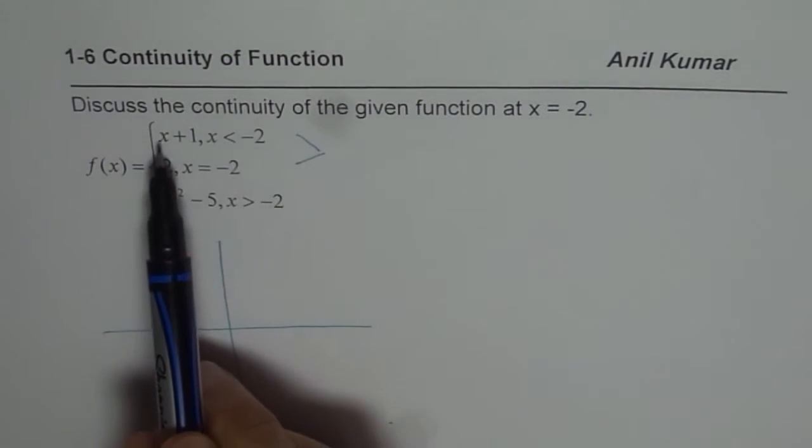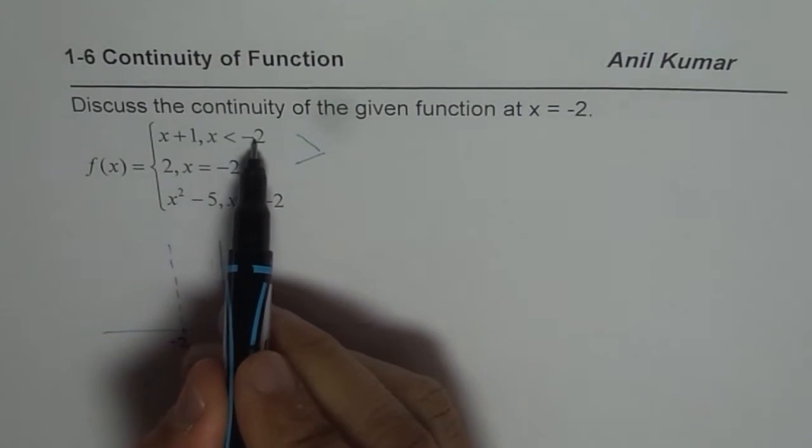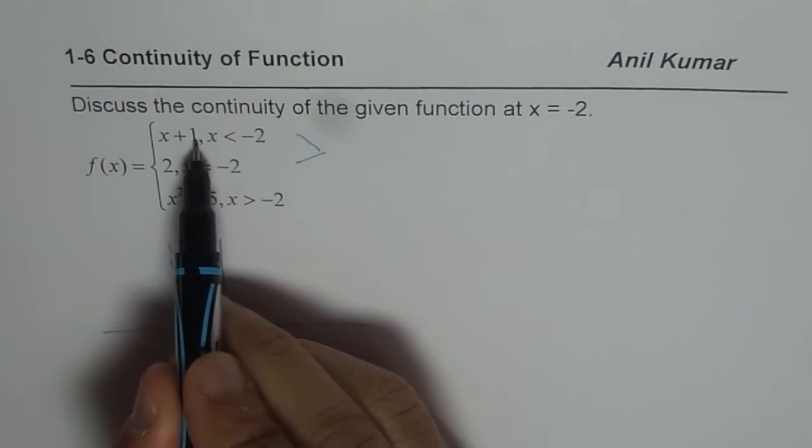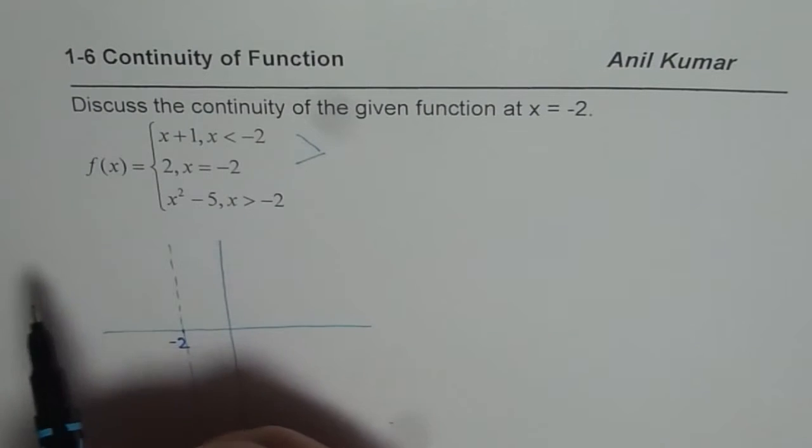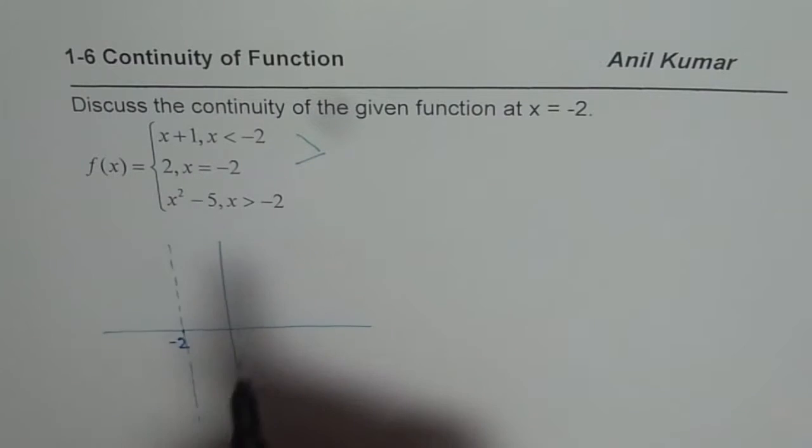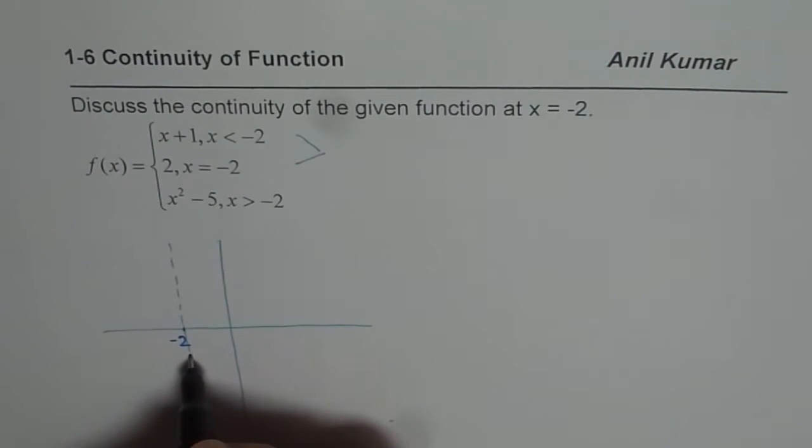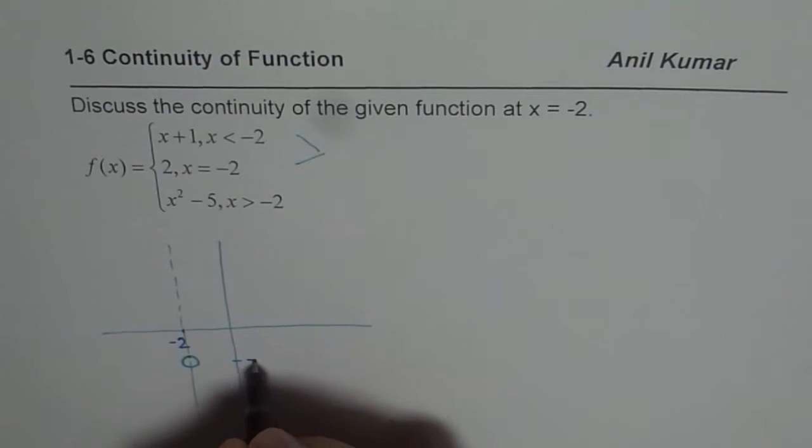The function is x plus 1 and it has a hole at minus 2 because minus 2 is not included but it includes all other points which are less than minus 2. So if I write minus 2 here, I get minus 1. So this is minus 1 for me. So I will make a hole here. And that point is indeed minus 1.